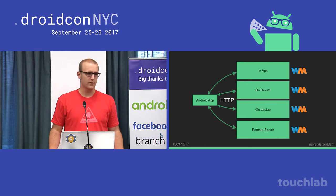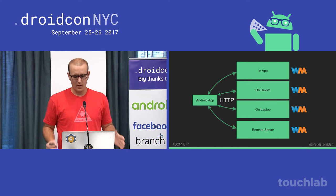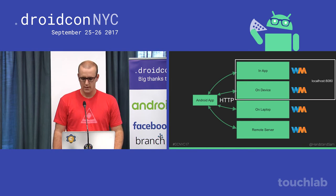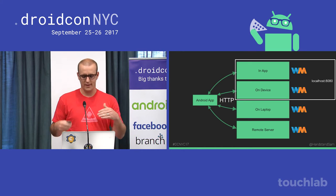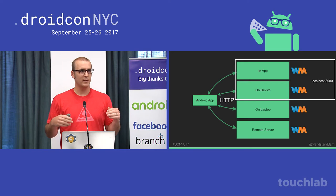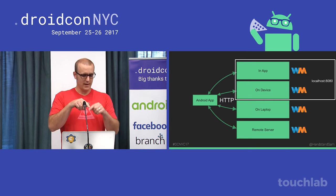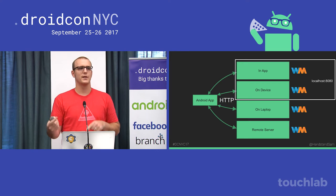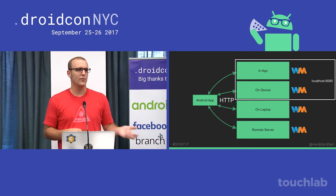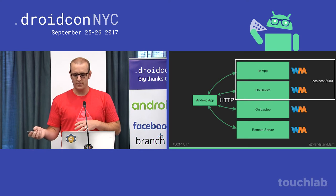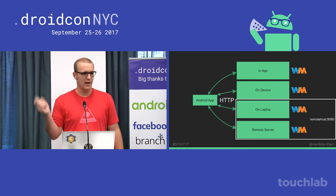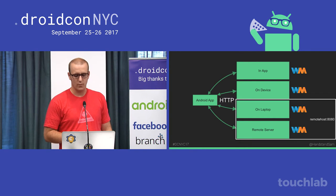You can run WireMock on a remote server, on the cloud, wherever else — it still functions the exact same way. If WireMock is running within your app or on the device, you're going to talk to it over localhost. It runs on port 8080 by default, though that's configurable, and you can also configure the HTTPS port. If you run it remotely, you just use the IP address or hostname of whatever machine you're running WireMock on.